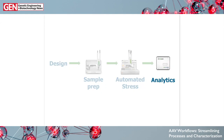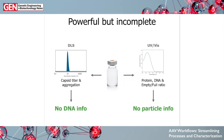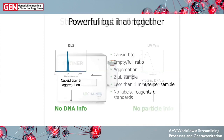Last we get to analytics, to check what happened during the buffer exchange and stress test. We have DLS and UV-Vis — each tells part of the story for AAV characterization. DLS gets you info on capsid titer and aggregation, but can't say anything about DNA content. UV-Vis gets you total amounts of DNA and protein and can link those to empty/full ratio, but doesn't tell you if any of this is contained in capsids. So what if you could combine them into a whole story? That's Stunner.